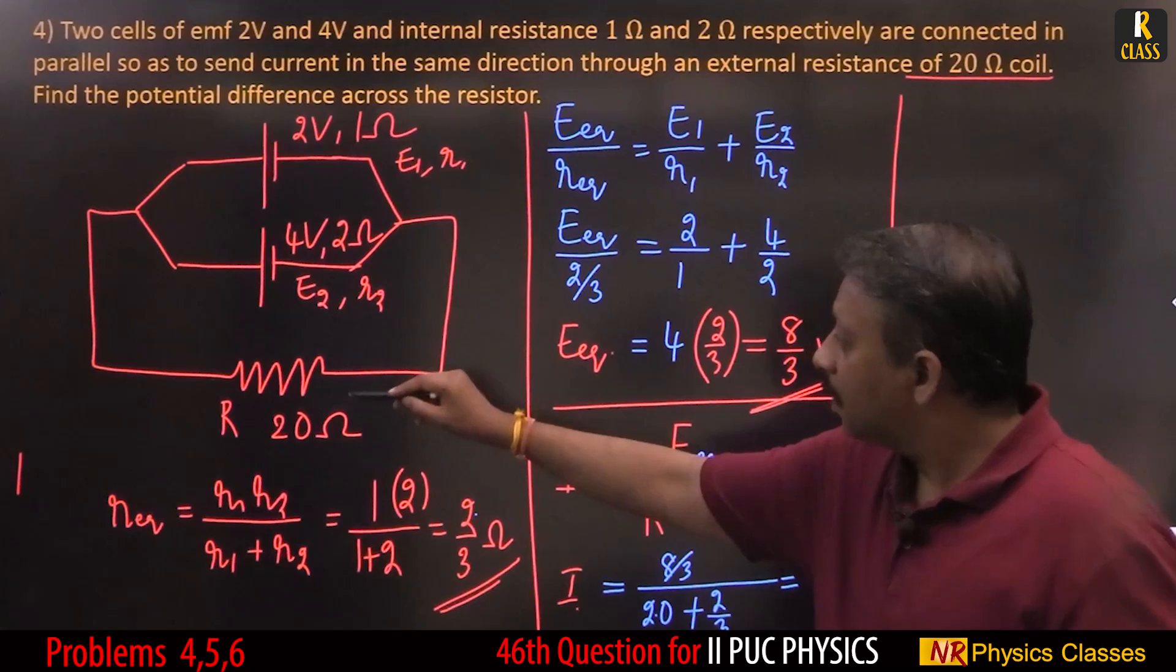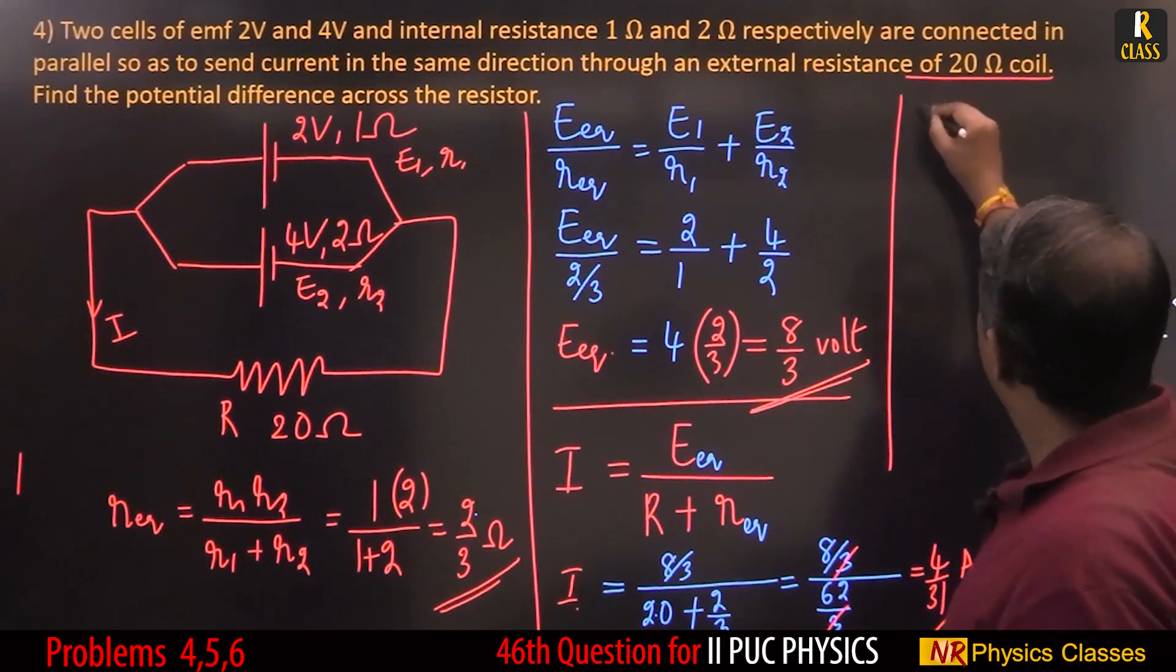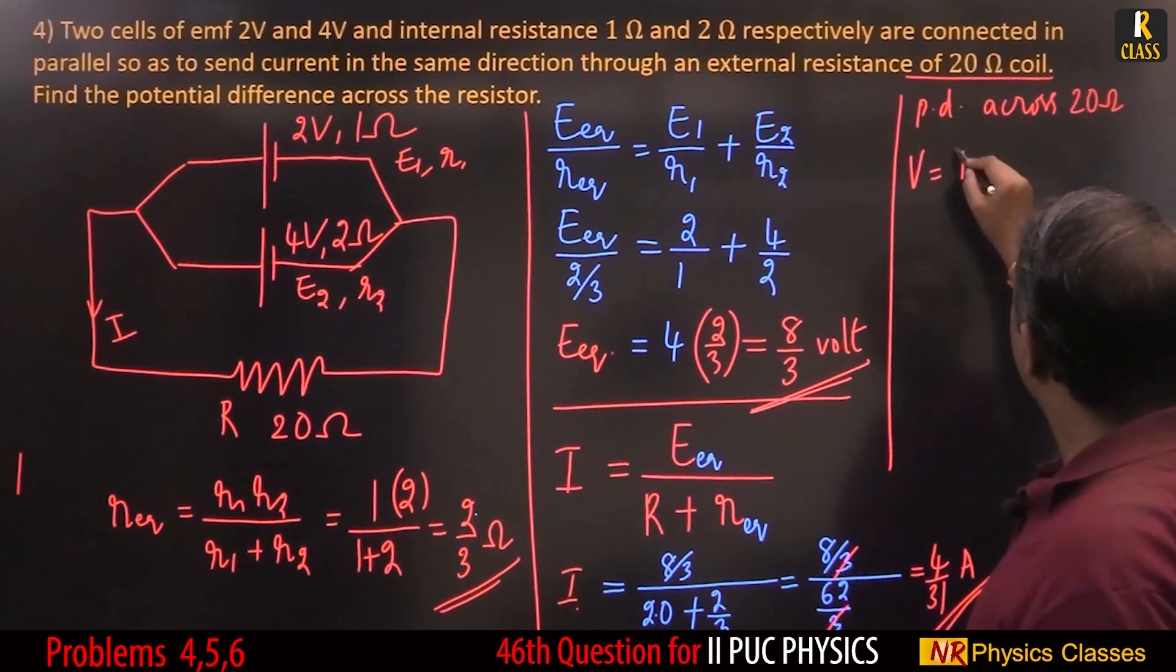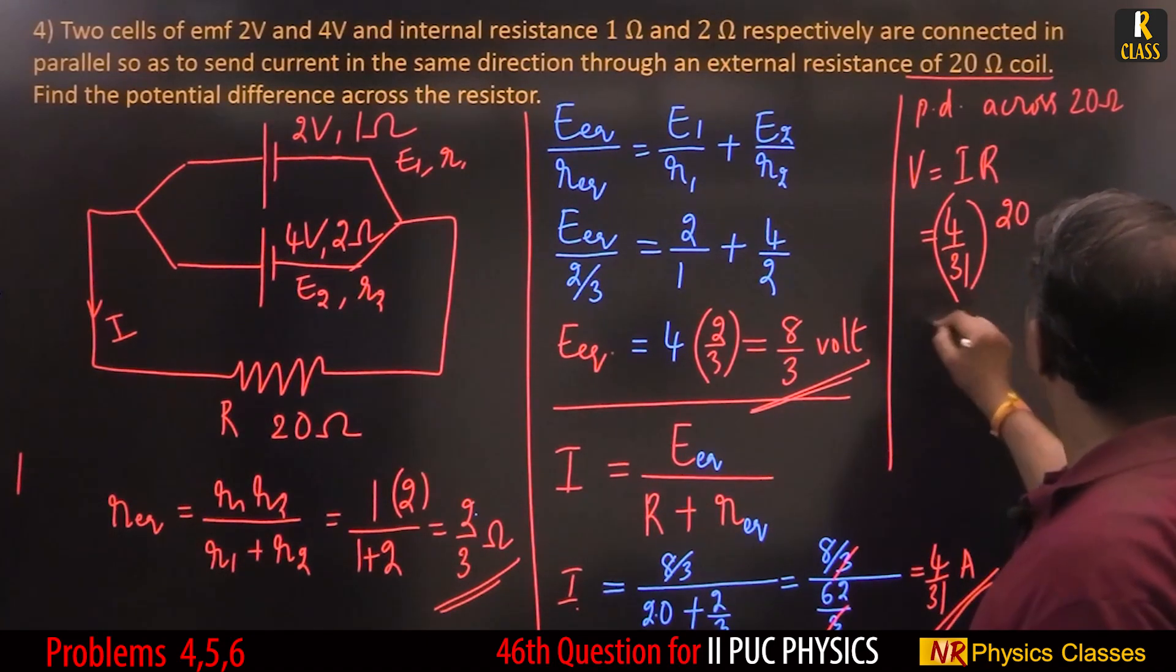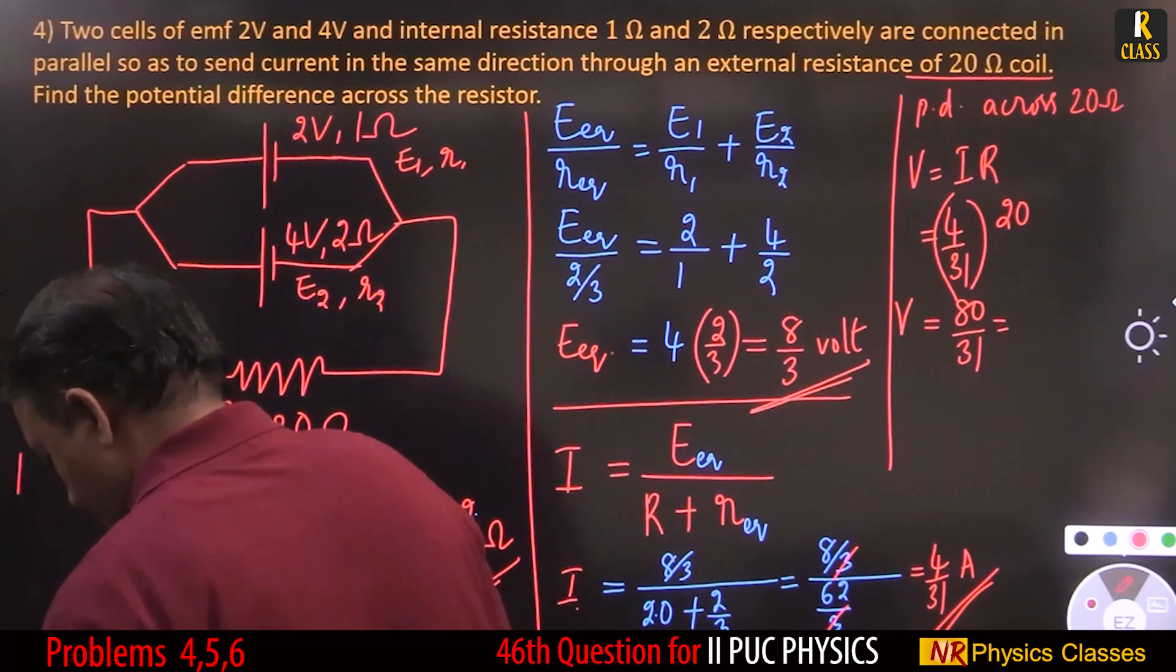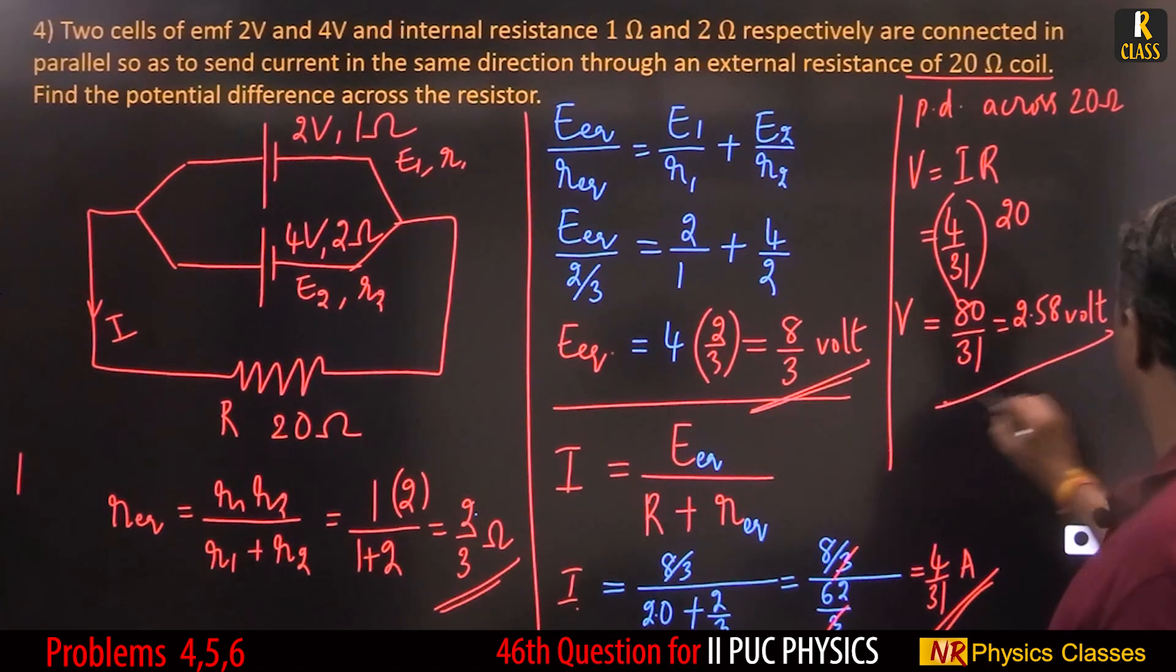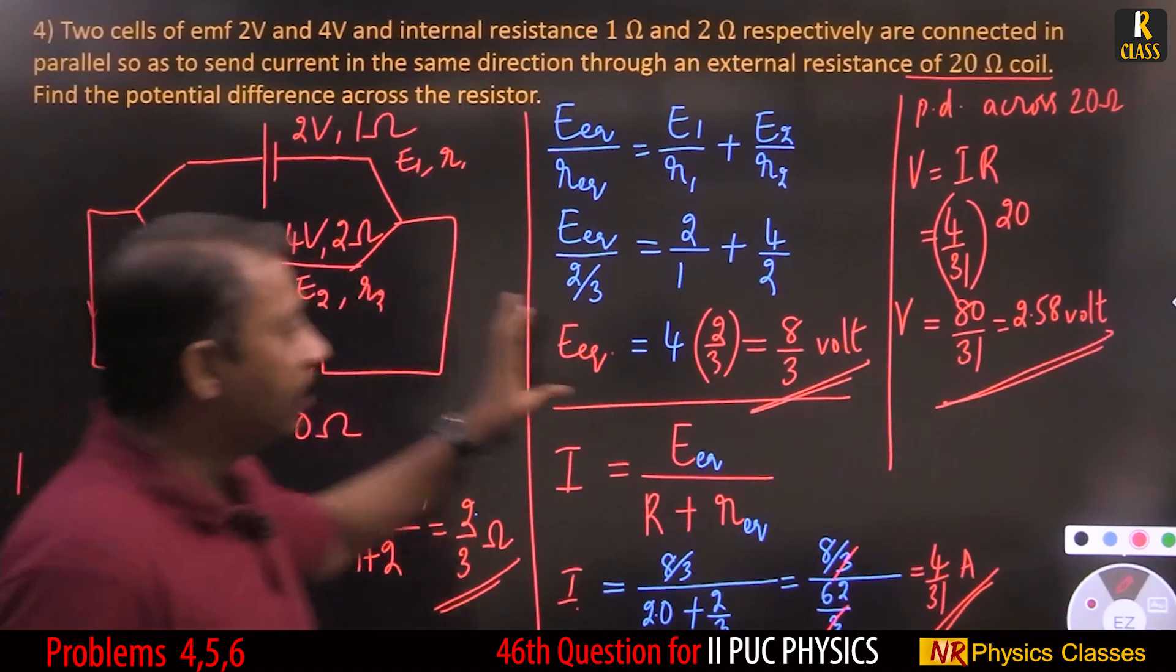Now potential difference across 20 ohm. Current through this is I which is 4 by 31. Therefore potential difference across 20 ohm is V equals I into R, which is 4 by 31 into 20. So it is 80 by 31 volt, which equals 2.58 V. This was cells in parallel, then potential difference.